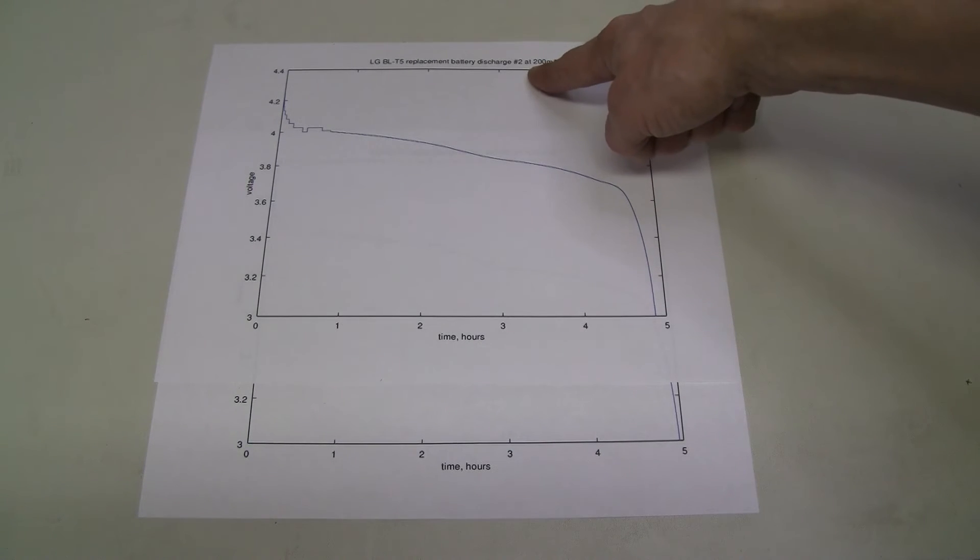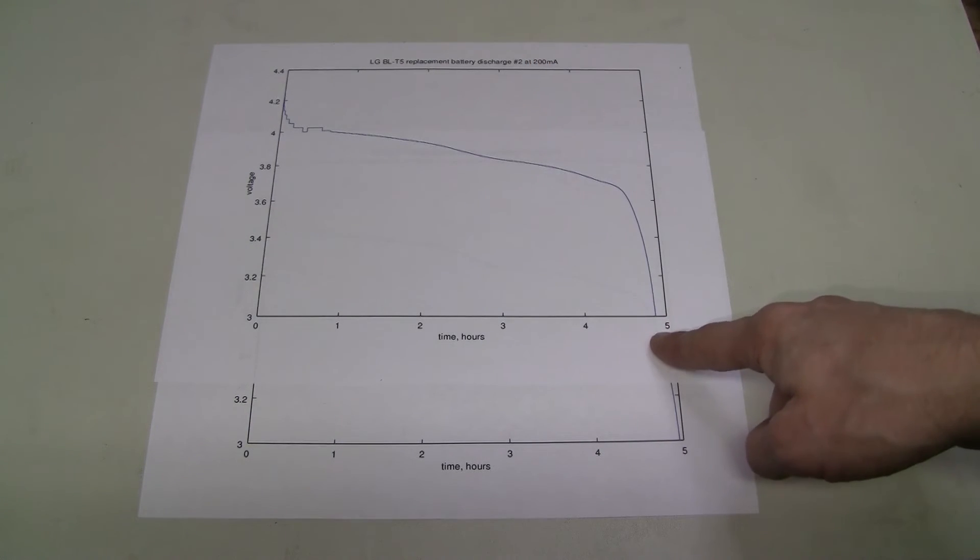And 200 milliamps times 5 hours is 1000 milliamp hours. And the battery is even slightly less than that. Which is less than half of rated capacity. And this is a complete fail.